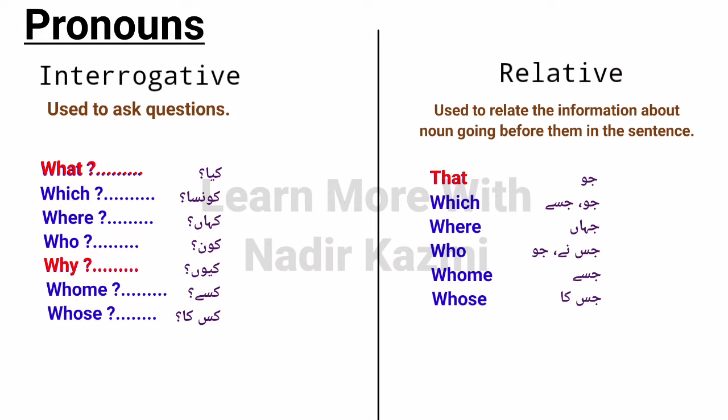Relative pronouns are: that, which, where, who, whom, whose. Note that 'what' and 'why' are not relative pronouns. Many of these words overlap between interrogative and relative pronouns, but the difference lies in their function. When they ask a question, they are interrogative; when they relate information about a preceding noun, they are relative. The difference becomes clear through examples.